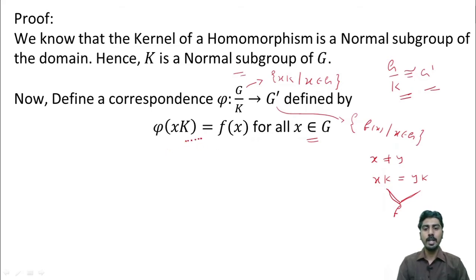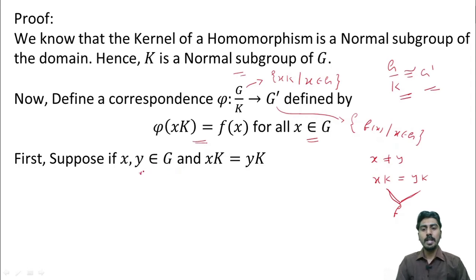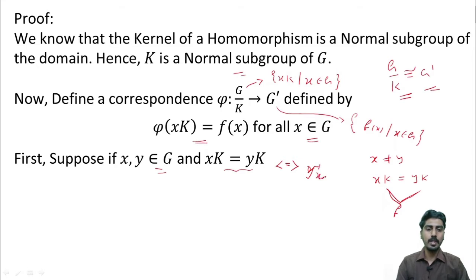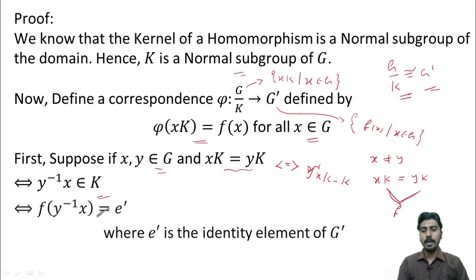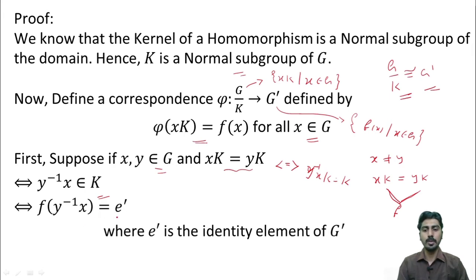First, we shall check whether this rule is a function or not. For that, we take x, y belonging to G such that xK equal to yK. xK is equal to yK if and only if y inverse xK is equal to K. And this happens only when y inverse x is an element of K. But K is the kernel of f. Therefore, we have f of y inverse x is equal to e dash, where e dash is the identity element of K dash.